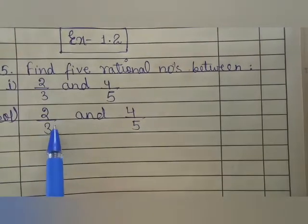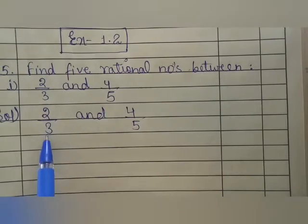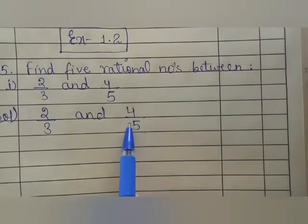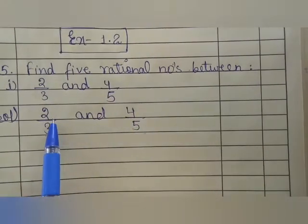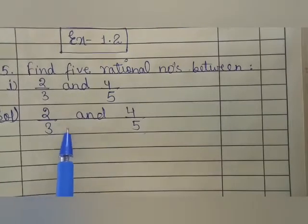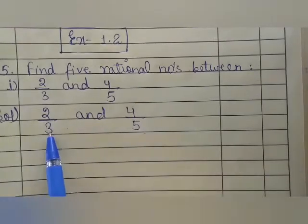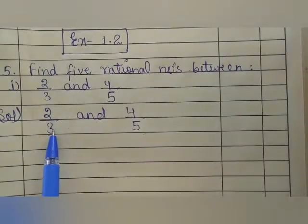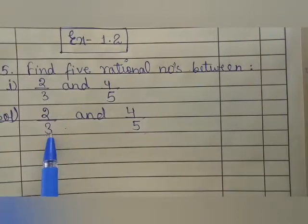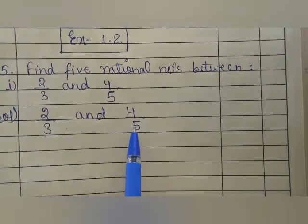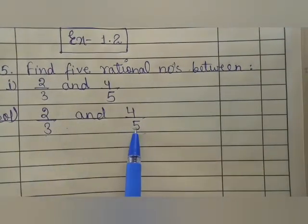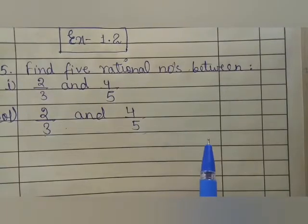As you can see, here we have 3 and here we have 5. We will multiply this number by 5 upon 5 and this number we will multiply by 3. When we multiply 3 to 5, we will get 3 fives are 15, and when we multiply 3 to this 5, we will get 3 fives are 15.